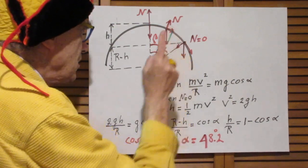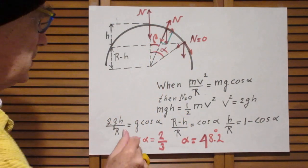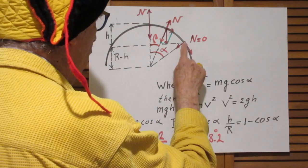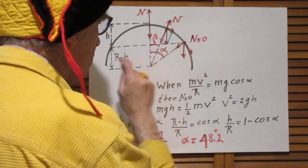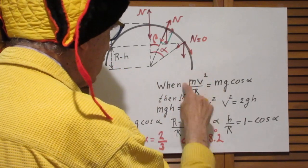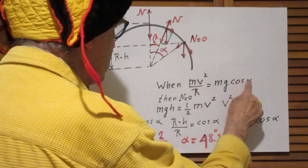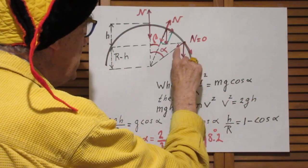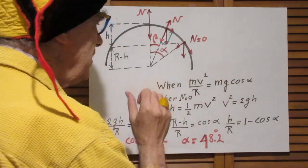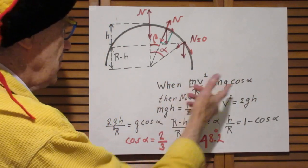So when the speed is v, the centripetal force is mv squared divided by r at this point. So when mv squared divided by r, which is the centripetal force on this object, is mg cos alpha, which is this little force, then n equals zero.